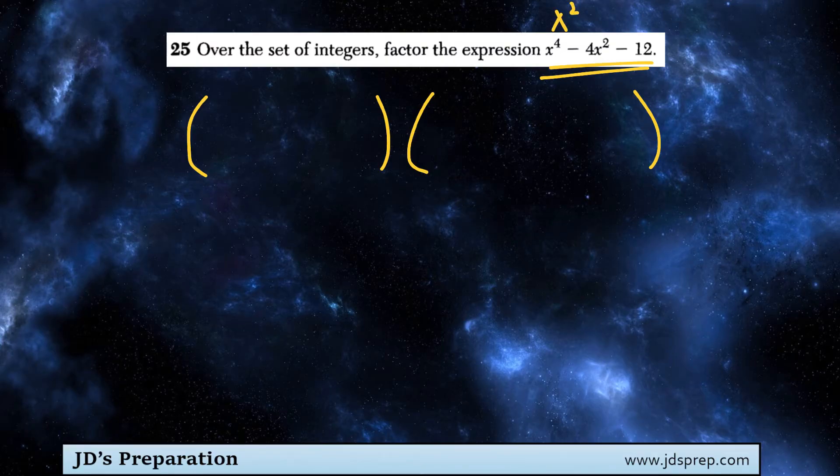But because it's x to the power of 4, we're going to be writing x squared as the first term in each set of brackets, just like that.